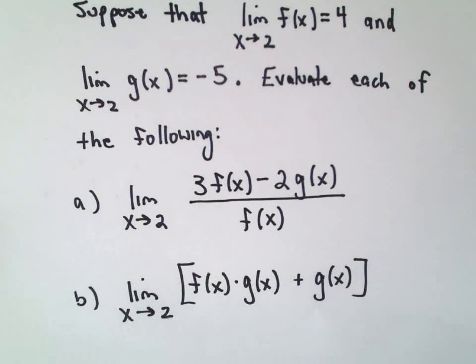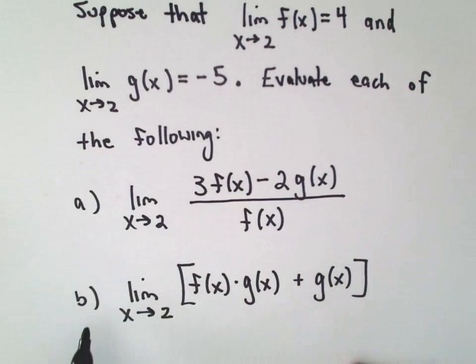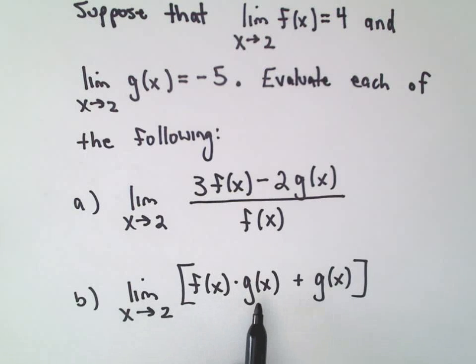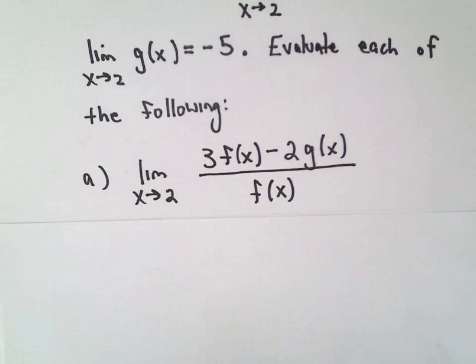Part A, we've got the limit as x approaches 2 of 3 times f of x minus 2 times g of x over f of x. Part B, we'll do the limit as x approaches 2 of f of x times g of x plus g of x. Let's do part A here first.